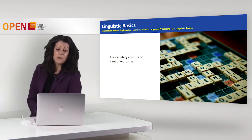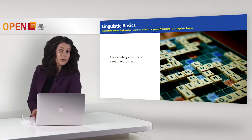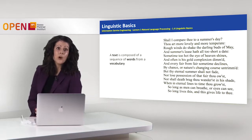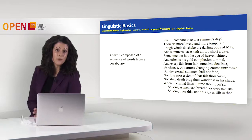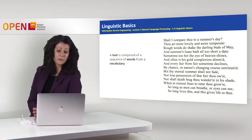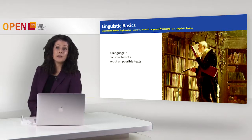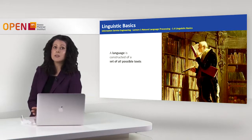And then we have the vocabulary. A vocabulary consists of a set of words, and it is the way that we communicate with people, exchange opinions, and transfer knowledge through our vocabulary. A text is composed of a sequence of words from a certain vocabulary. Here on the right part of the slide we have a piece of text composed of words from an English vocabulary. And language in the end is formed from all of this together — it is constructed of a set of all possible texts, which are sets of words based on a certain vocabulary.